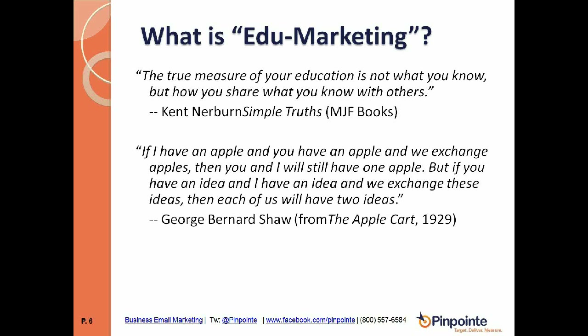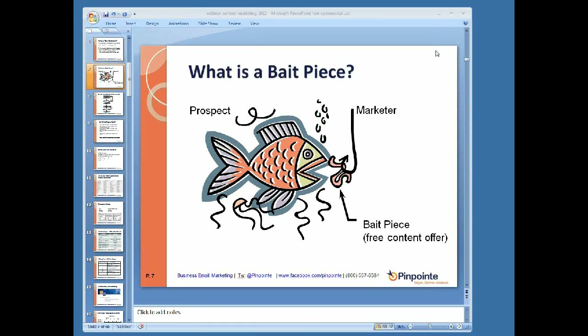George Bernard Shaw said: if I have an apple and you have an apple and we exchange apples, then you and I will still have one apple. But if you have an idea and I have an idea and we exchange these ideas, then each of us will have two ideas. If you consider yourself as fishing for prospects, the prospect is the fish, you're the marketer with a fish hook, and the free content offer is the bait — the incentive for the fish to bite.